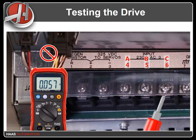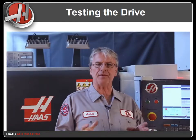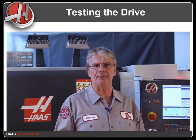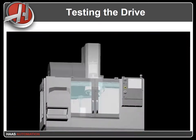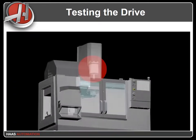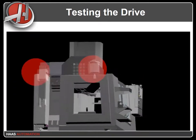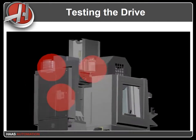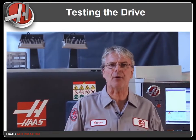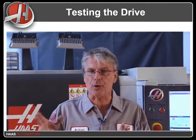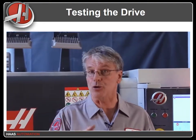Now that you've determined the vector drive has failed, it's important to eliminate other possible causes. Check the spindle motor, the spindle motor cables, the regen assembly, and the Delta-Y assembly if fitted, for shorts or for other damage. Make sure that you identify and repair any problems here before you replace the vector drive, or you just might damage the new one in the same way.